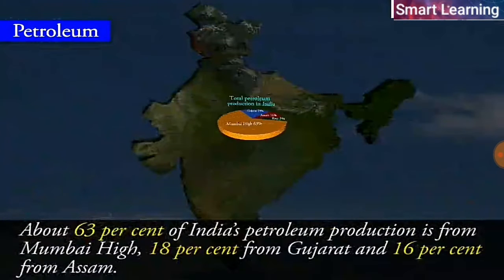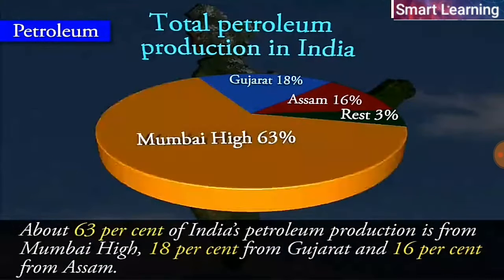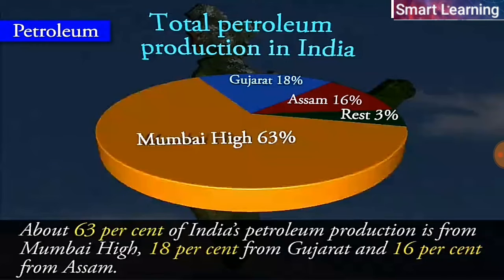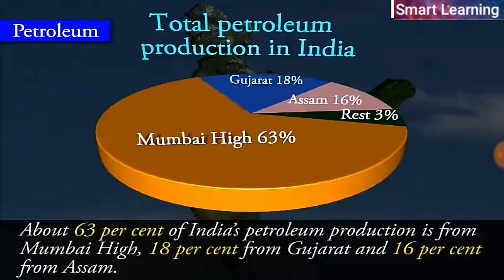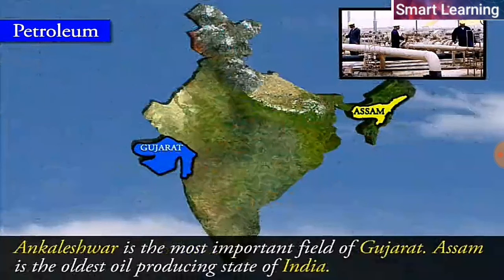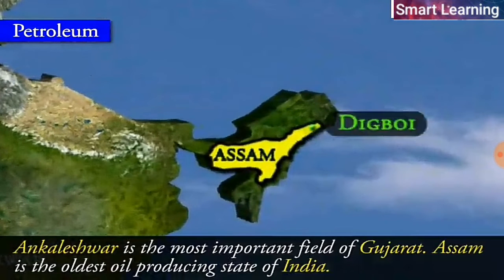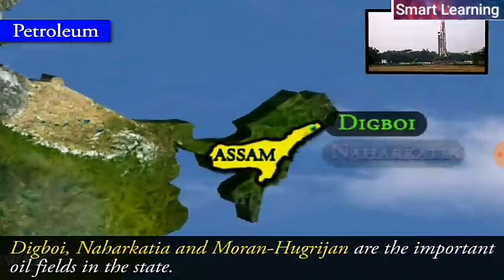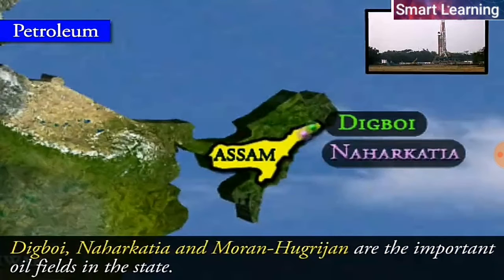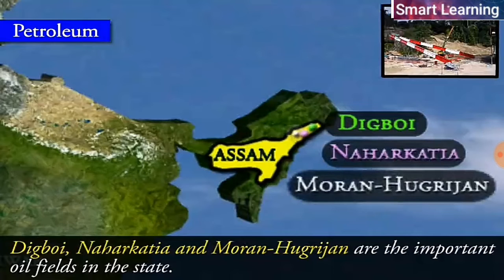About 63% of India's petroleum production is from Mumbai High, 18% from Gujarat, and 16% from Assam. Ankleshwar is the most important oil field of Gujarat. Assam is the oldest oil-producing state of India. Digboi, Naharkatiya, and Moran Hugrijan are the important oil fields in the state.